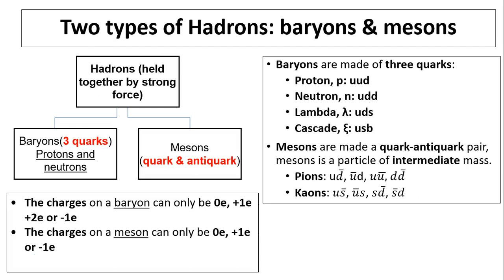Baryons are made of three quarks. These are the examples of baryons: a proton, a neutron, a lambda particle, a cascade particle. Protons have three quarks, up, up, and down. So two ups and one down quark. A neutron is made up of one up quark and two down quarks. A lambda particle has up, down, and strange. Cascade has up, strange, and bottom.